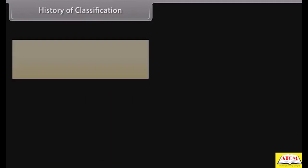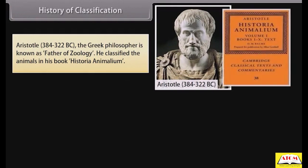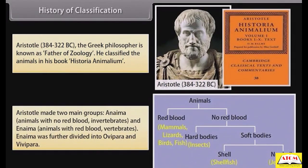History of Classification: Aristotle (384–322 BC), the Greek philosopher, is known as the father of zoology. He classified animals in his book Historia Animalium. Aristotle made two main groups: Anaima, animals with no red blood (invertebrates), and Enaima, animals with red blood (vertebrates). Enaima was further divided into ovipara and vivipara.